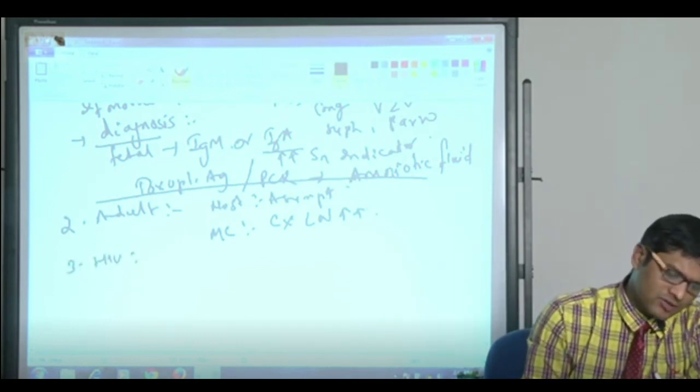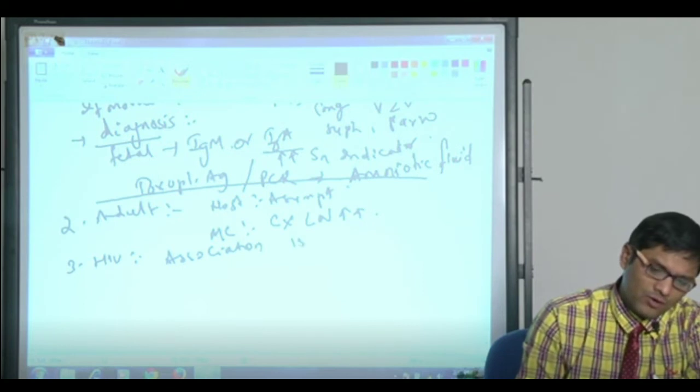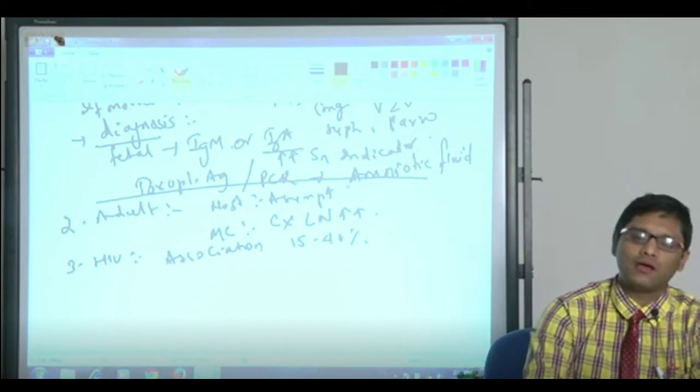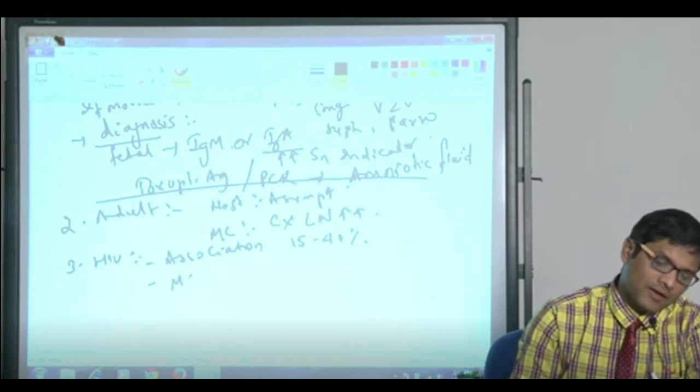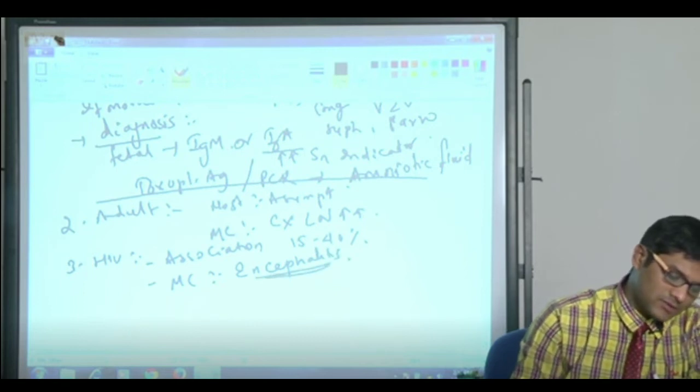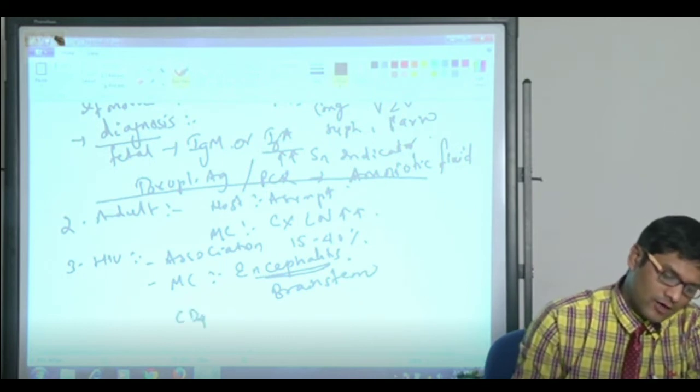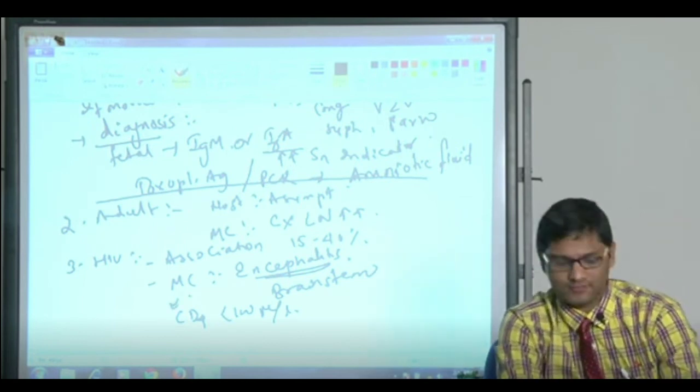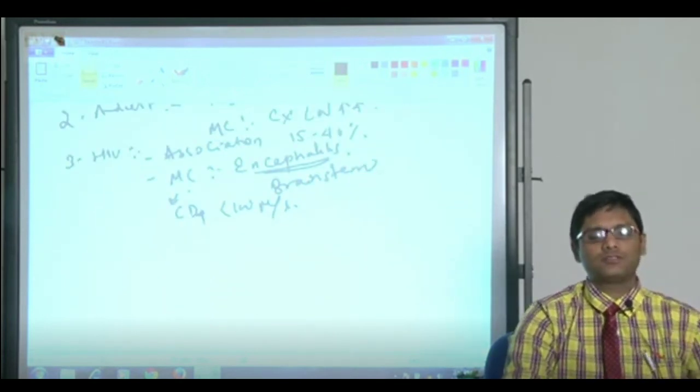In HIV infected individuals, they say the association is around 15 to 40%. 15 to 40% of HIV individuals are co-infected with toxoplasma. Most common manifestation in HIV individuals is encephalitis, affecting most commonly the brain stem. And the CD4 count falls below 100, this is the most important risk factor. This is about toxoplasmosis in HIV individuals.